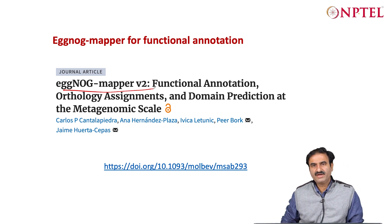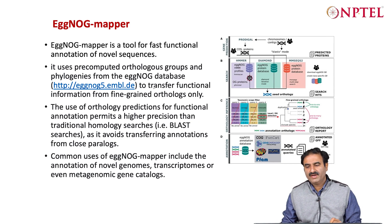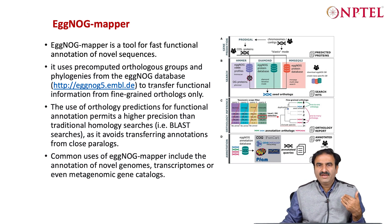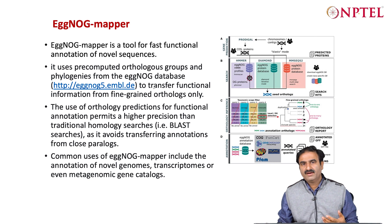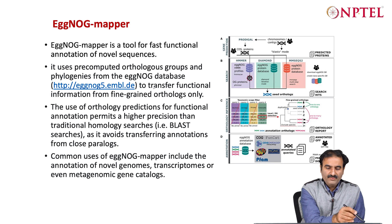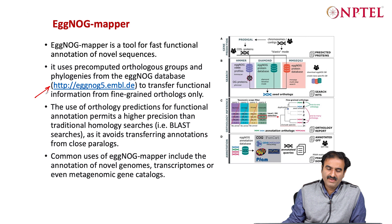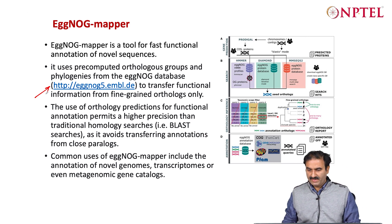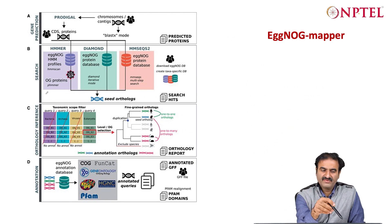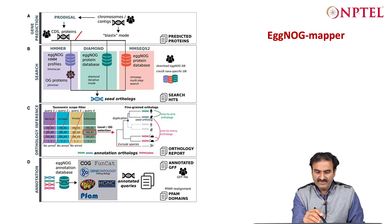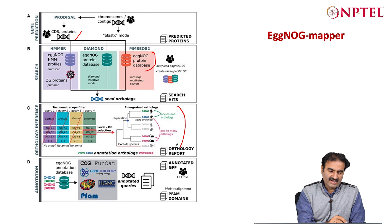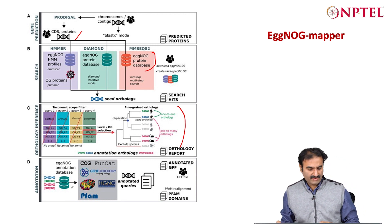EggNOG Mapper v2 is a tool used for functional annotation using the EggNOG database. It can be used online where you submit your sequences and it gives you classification into various functional categories, does KEGG mapping, and predicts KO numbers. It uses pre-compiled databases of orthologous groups. From your sequences it will predict genes if not already available, or you can provide the list of predicted genes, which it compares against the EggNOG protein database to derive orthologues across species and then classify into functional categories using COG, Pfam, or KEGG.